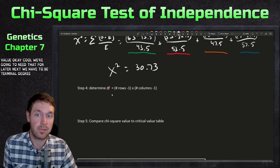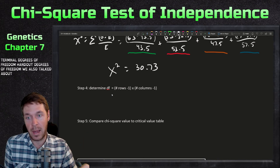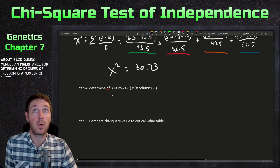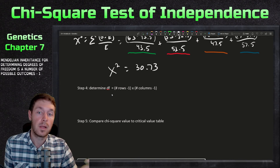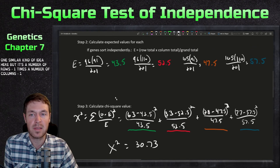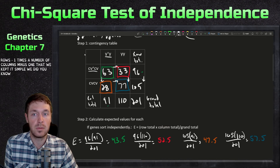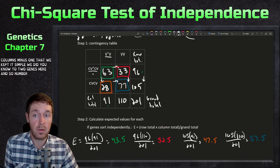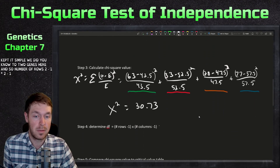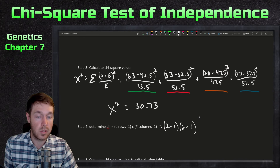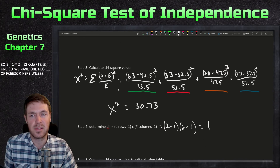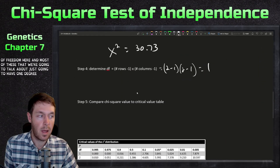Next we determine degrees of freedom. We discussed this during Mendelian inheritance — degrees of freedom was the number of possible outcomes minus one. Here it's the number of rows minus one times the number of columns minus one. We have two rows and two columns, so it's (2 minus 1) times (2 minus 1), which equals 1. We have one degree of freedom, and most of these problems will have one degree of freedom.